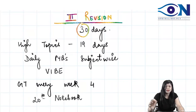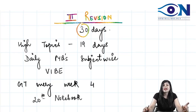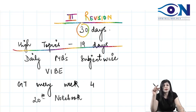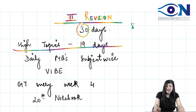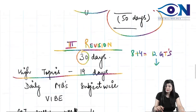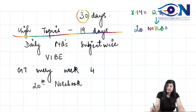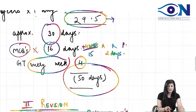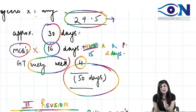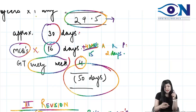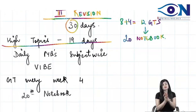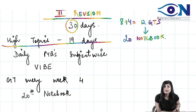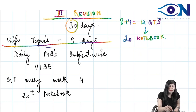The third revision consists of 30 days. You have 19 subjects and 19 days — one day each — to cover high-yield topics only. By now you have already given 8 plus 4 equals 12 GTs and built your 20th notebook. Focus only on topics that appeared frequently in PYQs or were difficult for you in GTs — not everything. Daily PYQs are essential in this phase.